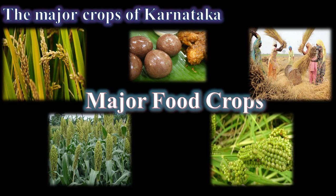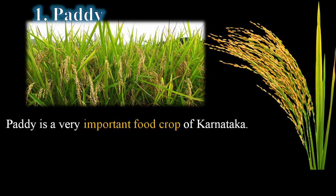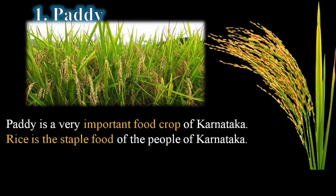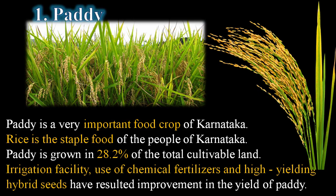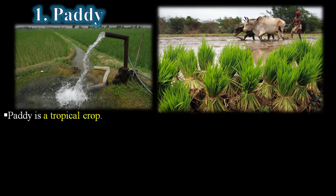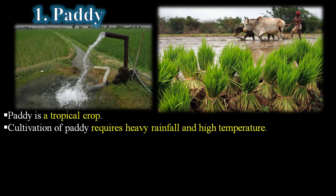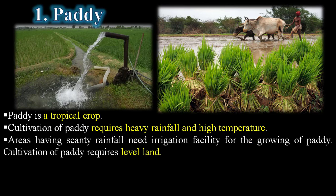The first major food crop is paddy. Paddy is a very important food crop of Karnataka — rice is the staple food of the people of Karnataka. Paddy is grown in 28.2 percent of the total cultivatable land. Use of irrigation, chemical fertilizers, and high-yielding hybrid seeds have resulted in improvement in the yield of paddy. Paddy is a tropical crop requiring heavy rainfall and high temperature.